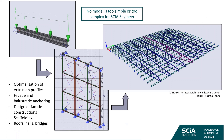No model is too simple or too complex for SCIA Engineer. Whether you are just designing the cross-section itself, a simple beam, or — like these master students — the gigantic roof of a very famous stadium in Belgium, you can use SCIA Engineer to obtain your design results. You can do profile optimization, calculate façade structures, balustrade anchorings in 2D, façade constructions, scaffolding, roofs, halls, bridges — whatever you'd like. I'd also like to especially thank Seral Clouds who provided the example models you can see on the screen.